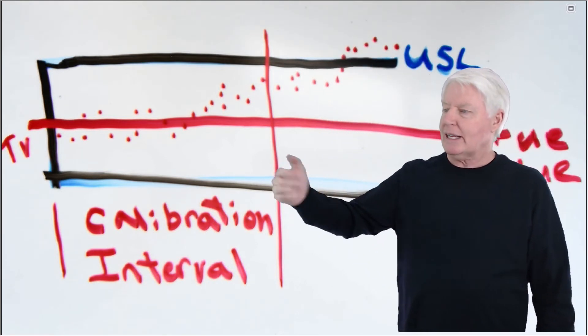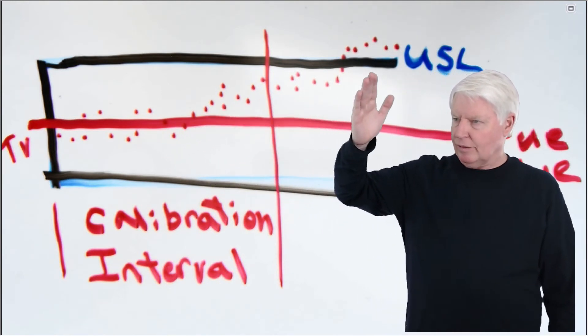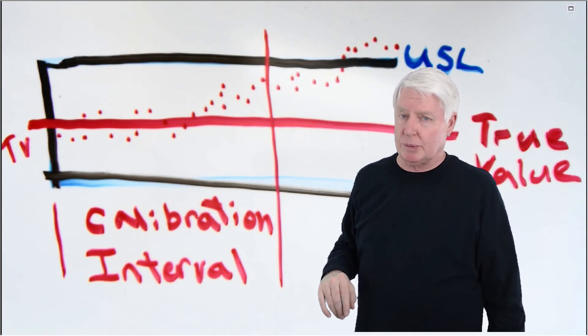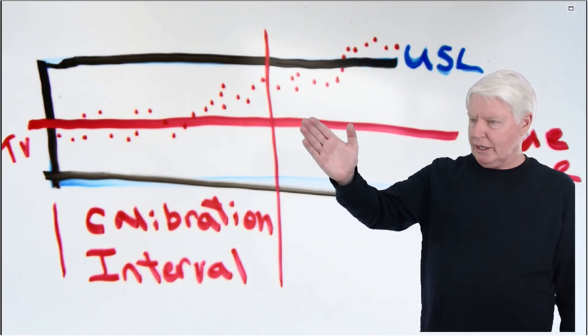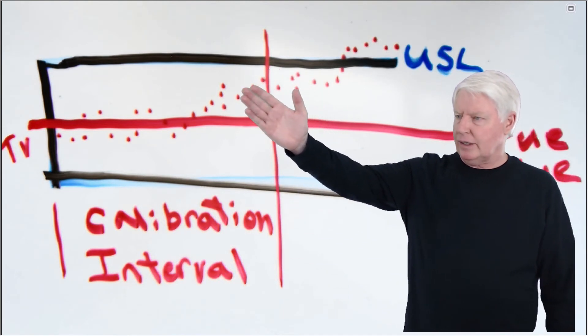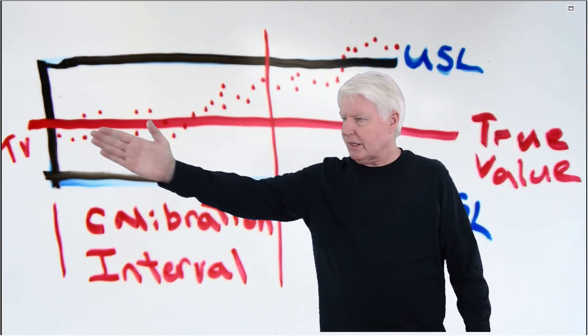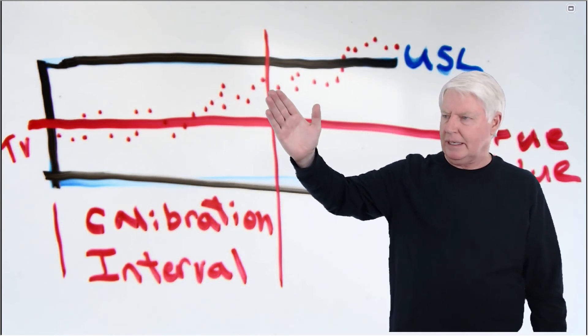So that's what drift is, the change in bias over time. Most instruments experience drift. Now, let's say this was one year out. You decided, okay, I'm going to let this go from this period of time to this period of time, because we look pretty safe of not violating the spec limit.